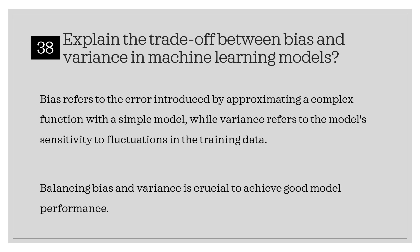Explain the trade-off between bias and variance in machine learning models. Bias refers to the error introduced by approximating a complex function with a simple model, while variance refers to the model's sensitivity to fluctuations in the training data. Balancing bias and variance is crucial to achieve good model performance.